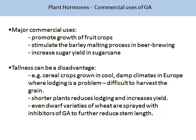Tallness can be a disadvantage in some crops. For example, cereal crops grown in cool, damp climates in Europe, where lodging is a problem, makes it difficult to harvest the grain. Therefore, producing shorter plants reduces lodging and increases yield. Even dwarf varieties of wheat are sprayed with inhibitors of GA to further reduce stem length.